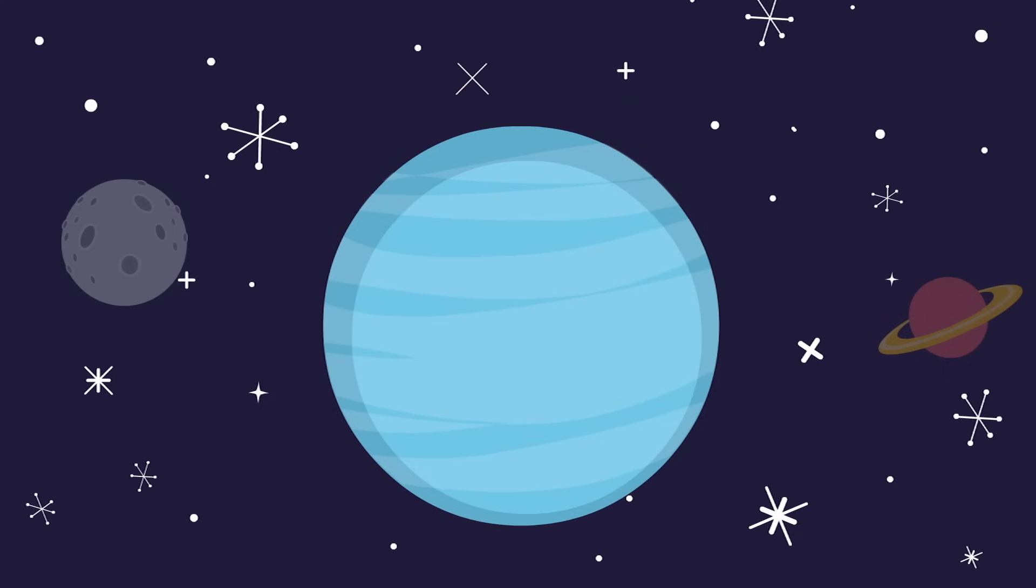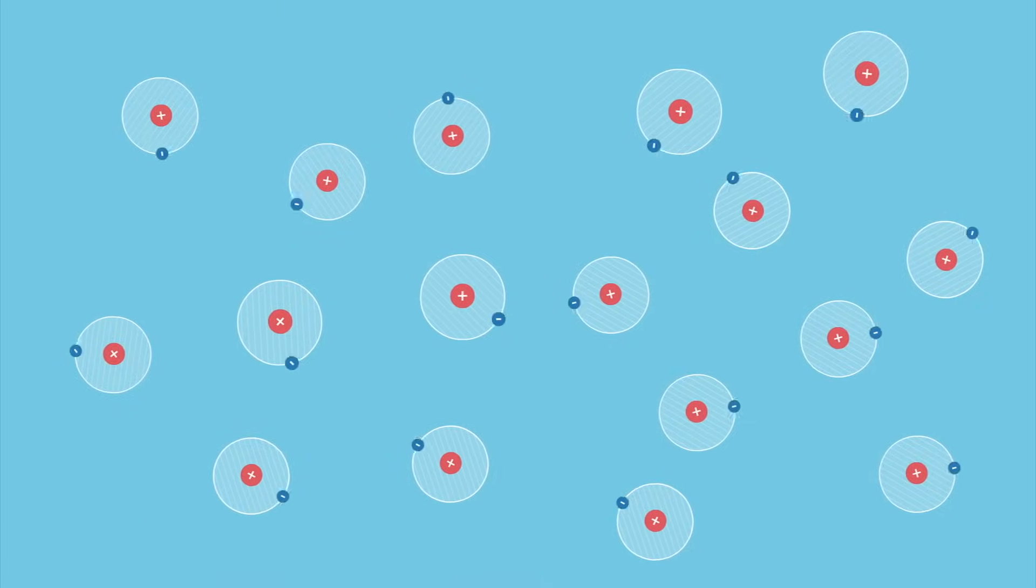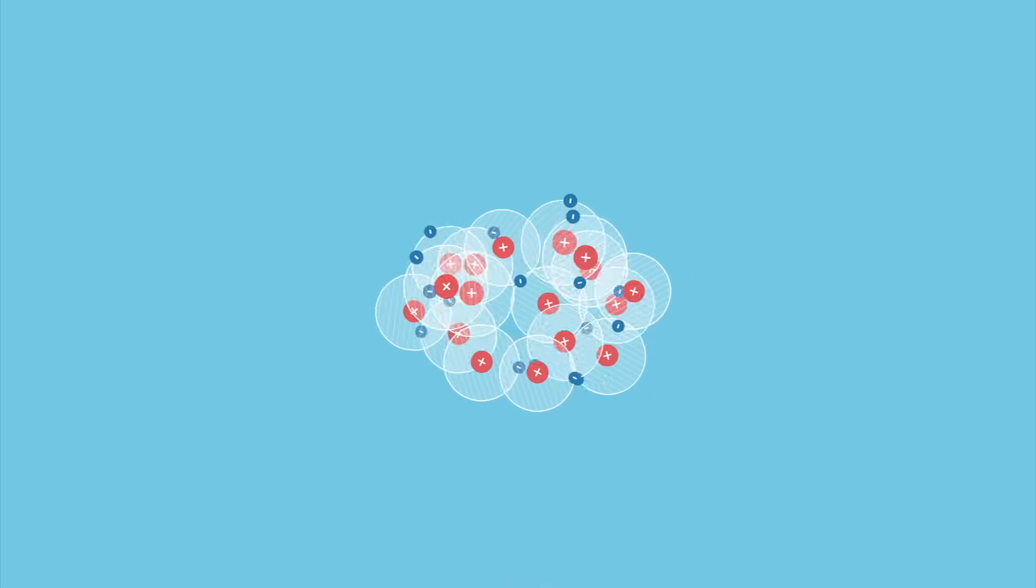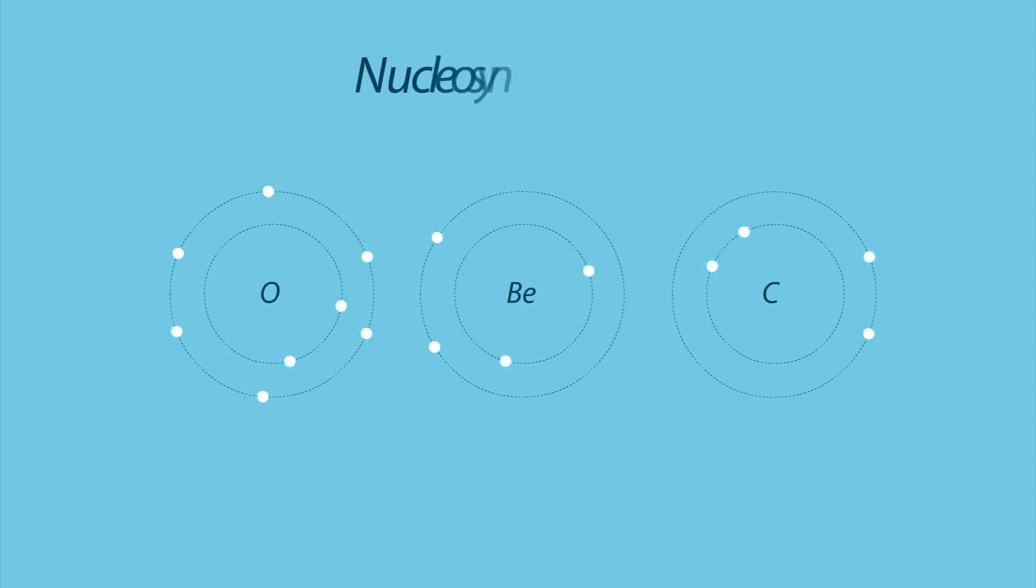The massive pressure at the center of these fiery infernos was so great that hydrogen atoms fused together to form helium. Helium, in turn, fused to form heavier elements, like beryllium, carbon, and oxygen, in a process known as nucleosynthesis.